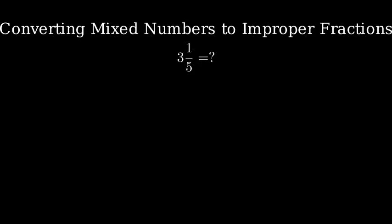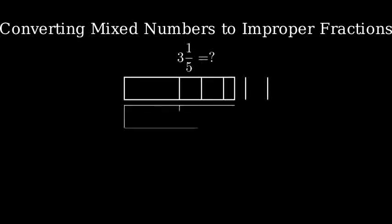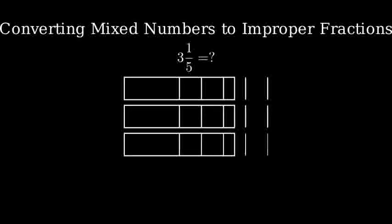First, let's look at our three whole numbers. Here's our first whole, divided into five equal parts. Here's our second whole, and here's our third whole. Each whole is divided into five equal parts.